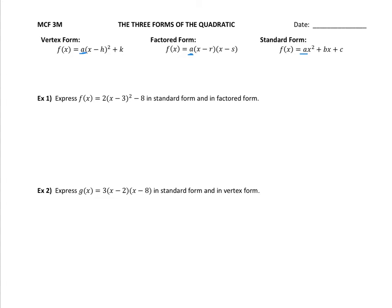Now the other thing these three forms tell us are certain things. So the vertex form tells us the vertex. Remember, switch the sign. The vertex is h, k. So that's your vertex value. You switch the sign on the h.